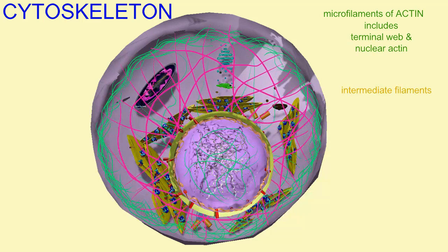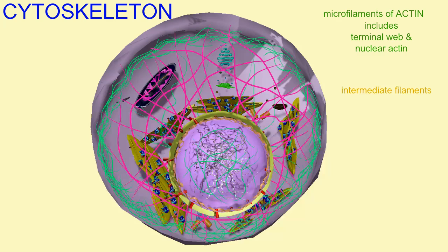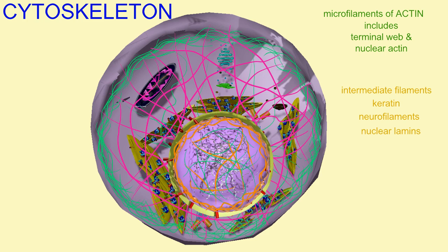and thus resist forces which might pull a cell. There are different types of intermediate filaments, which include keratin present in epithelial cells, neurofilaments common in neurons, and the lamins of the nucleus, which are a class of intermediate filament.